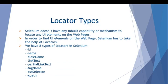Selenium doesn't have any inbuilt capability to locate UI elements on web pages — it takes the help of locators. There are eight types of locators in Selenium: ID, name, class name, link text, partial link text, tag name, CSS selector, and XPath.